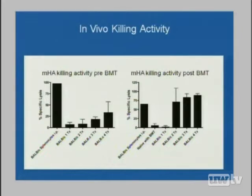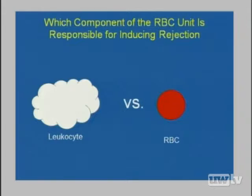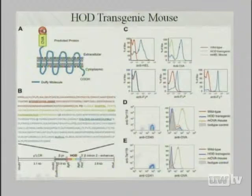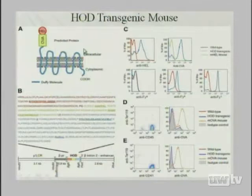We took a backdoor approach to asking whether it's the residual leukocyte or the erythrocyte, by trying to restrict antigen to one species or another. We generated a novel transgenic mouse we call the HOD mouse — an acronym for Hen Egg Lysozyme, Ovalbumin, and Duffy. This antigen expresses hen egg lysozyme, a well-studied humoral antigen, fused in-frame with Ovalbumin, a well-studied cellular antigen, then anchored to the membrane with an authentic human erythrocyte blood group antigen.